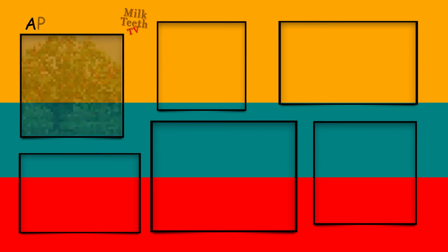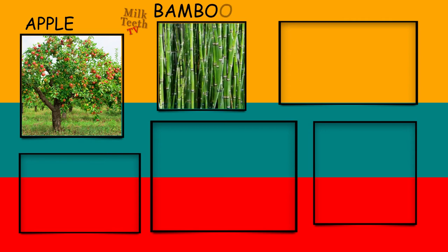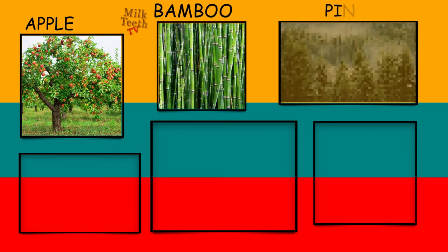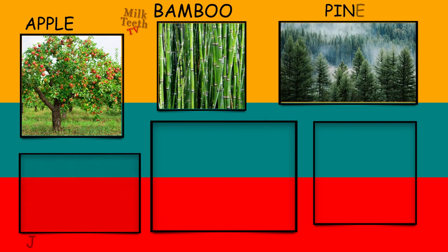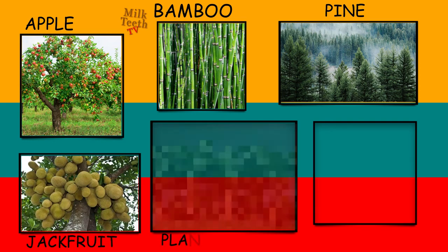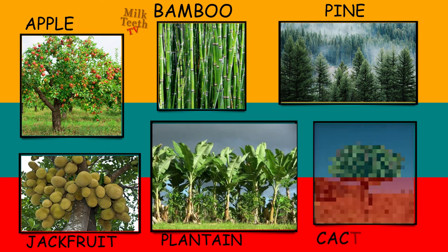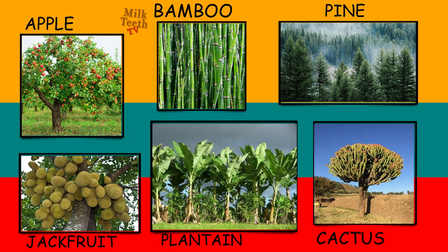Time to revise. Apple — sebe ka pedo. Bamboo — ya phir baas ka pedo. Pine — cheed. Jackfruit — katahel ka pedo. Plantain — kele ka pedo. Cactus — naag kani.